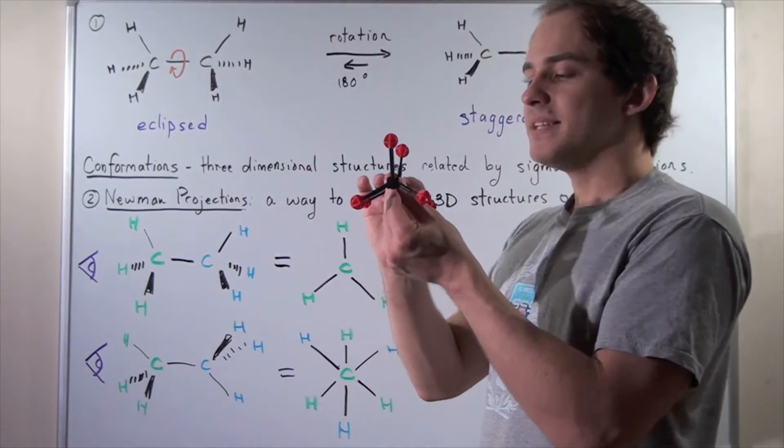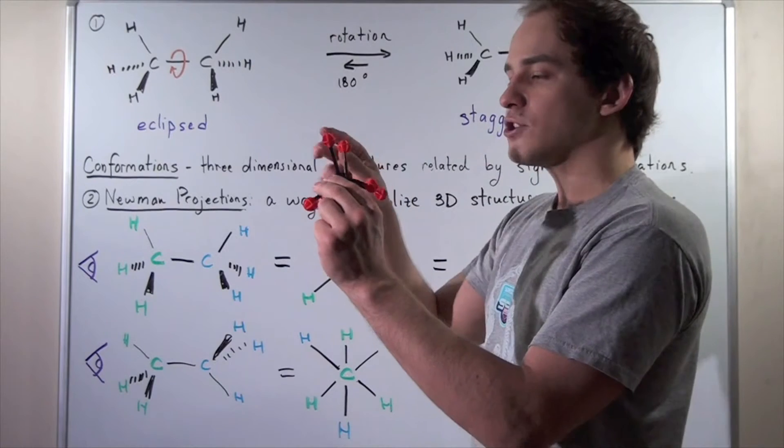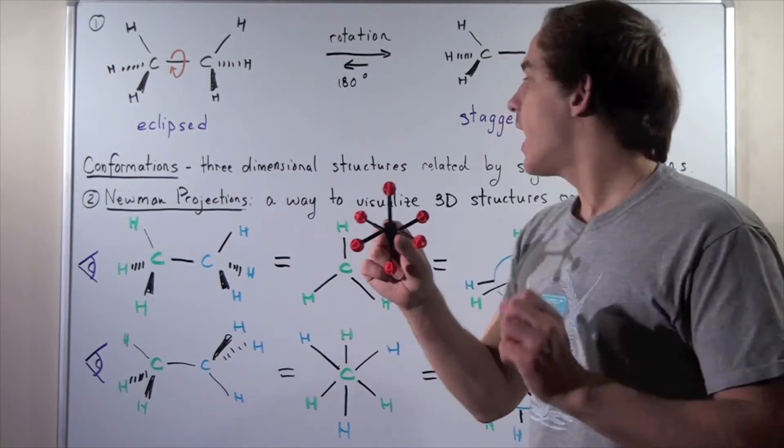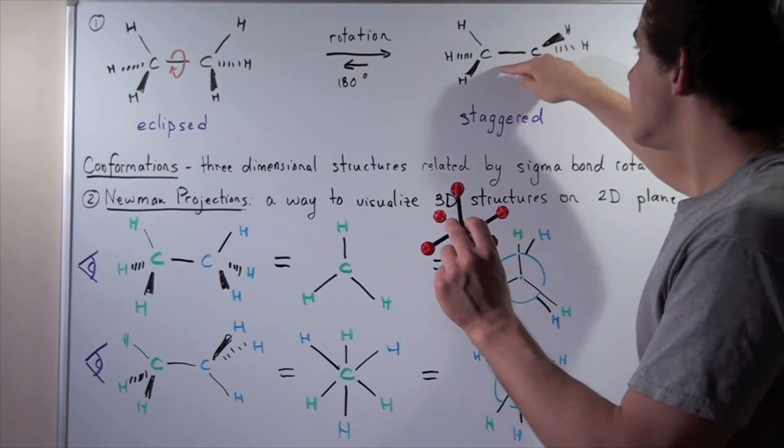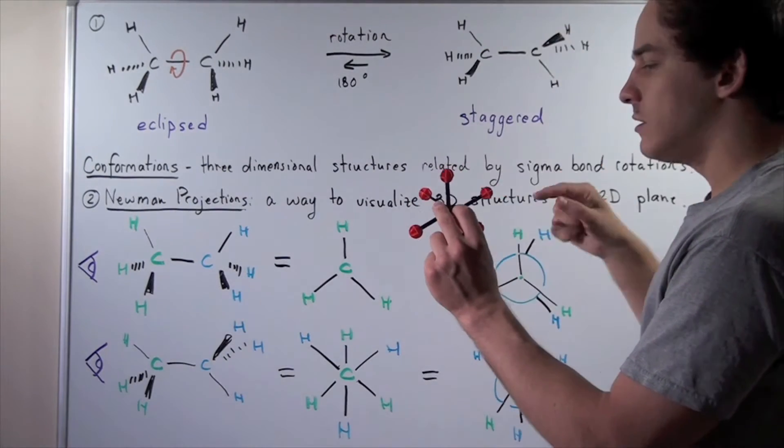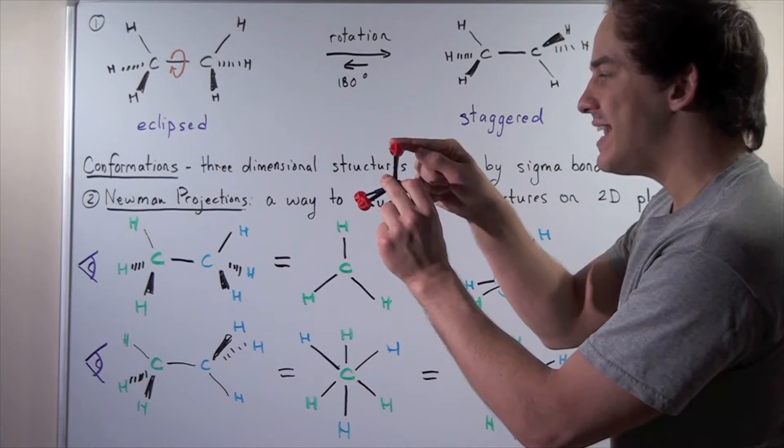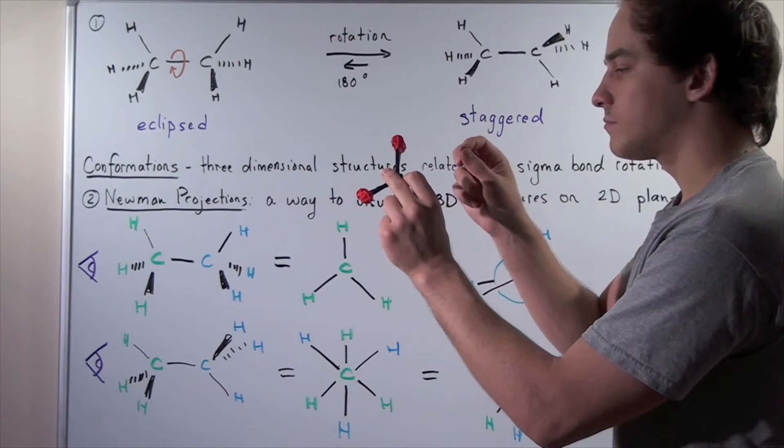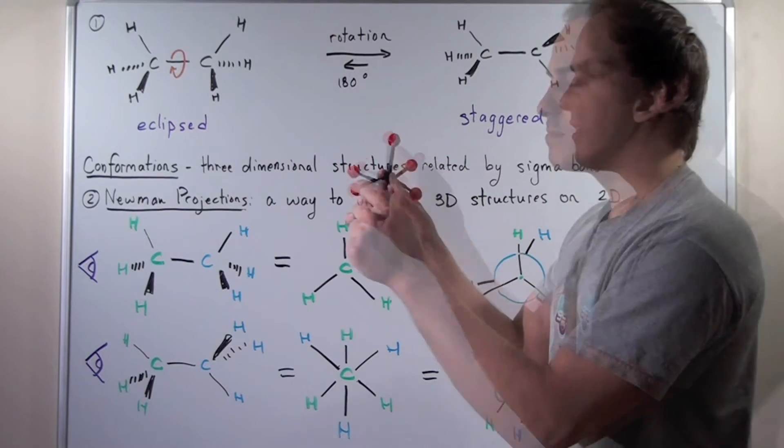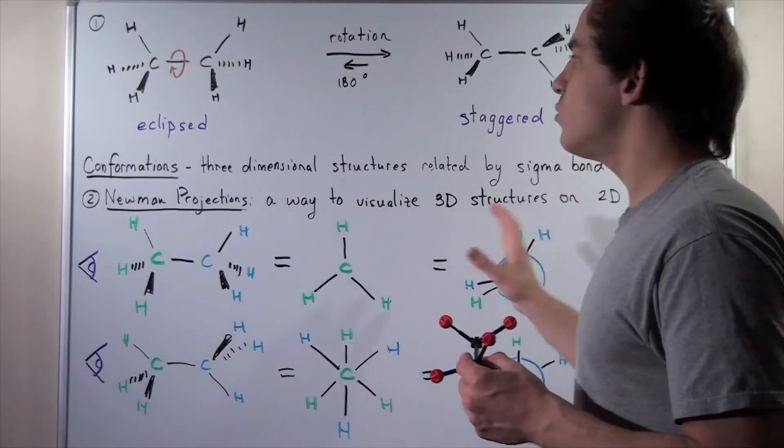This is eclipsed. Now, what happens if we take the sigma bond and rotate it 180 degrees in this fashion? We get the following staggered conformation. Staggered simply means that this carbon-carbon sigma bond rotated 180 degrees, and so these angles are now a 60-degree angle to one another. Before, we had zero degrees between each carbon-hydrogen bond, but now we have a measure of 60 degrees between this bond and this bond. This is a more stable conformation, and we'll see why in a second.